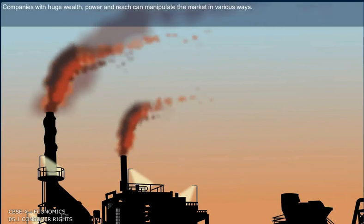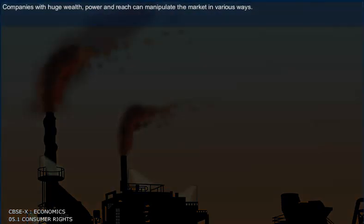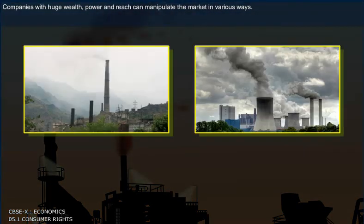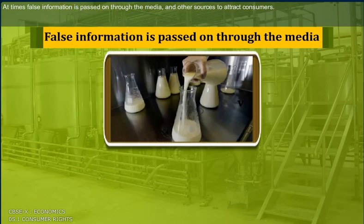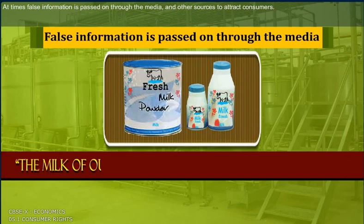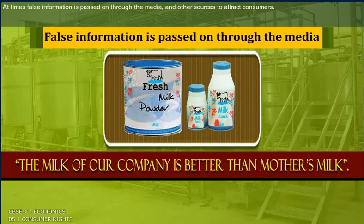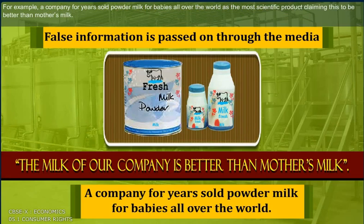Companies with huge wealth and power can manipulate the market in various ways. At times, false information is passed on through the media and other sources to attract consumers. For example, a company for years sold powder milk for babies all over the world as the most scientific product, claiming this to be better than mother's milk.